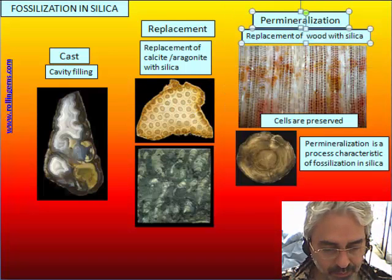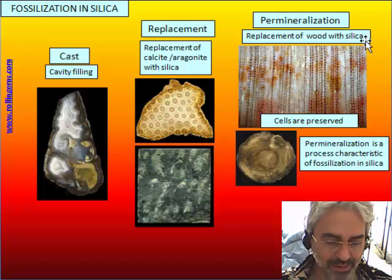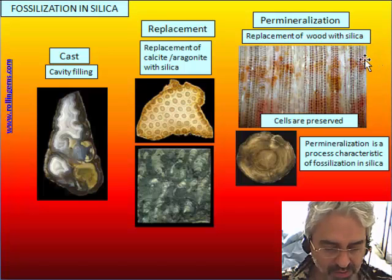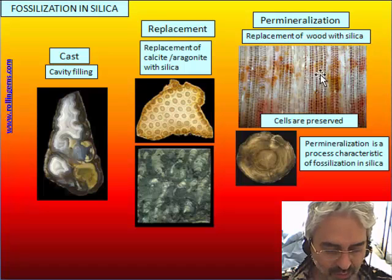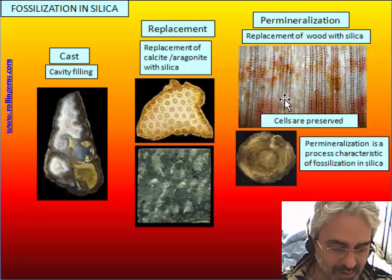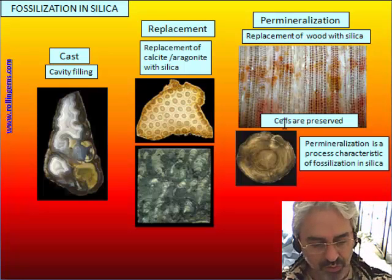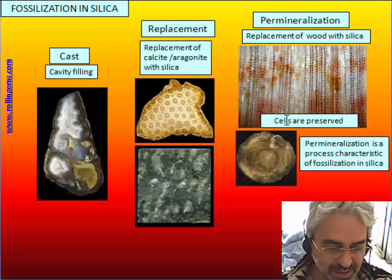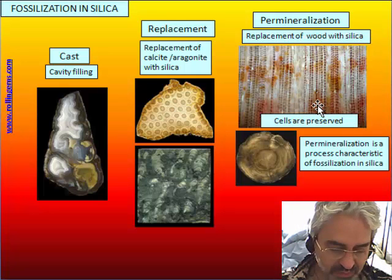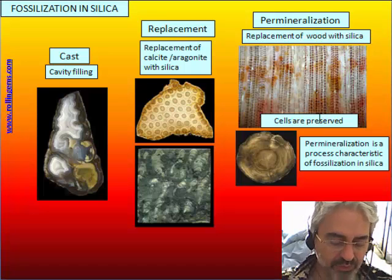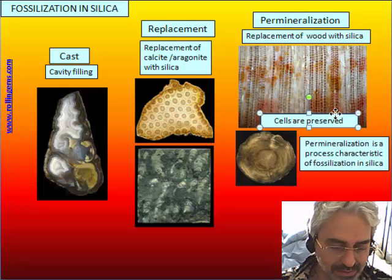Another kind of replacement is the replacement of wood by silica. This process is called permineralization and is a kind of fossilization that preserves very tiny details of the wood — also the shells are preserved. It is a process characteristic of fossilization in silica; it does not exist in carbonate.